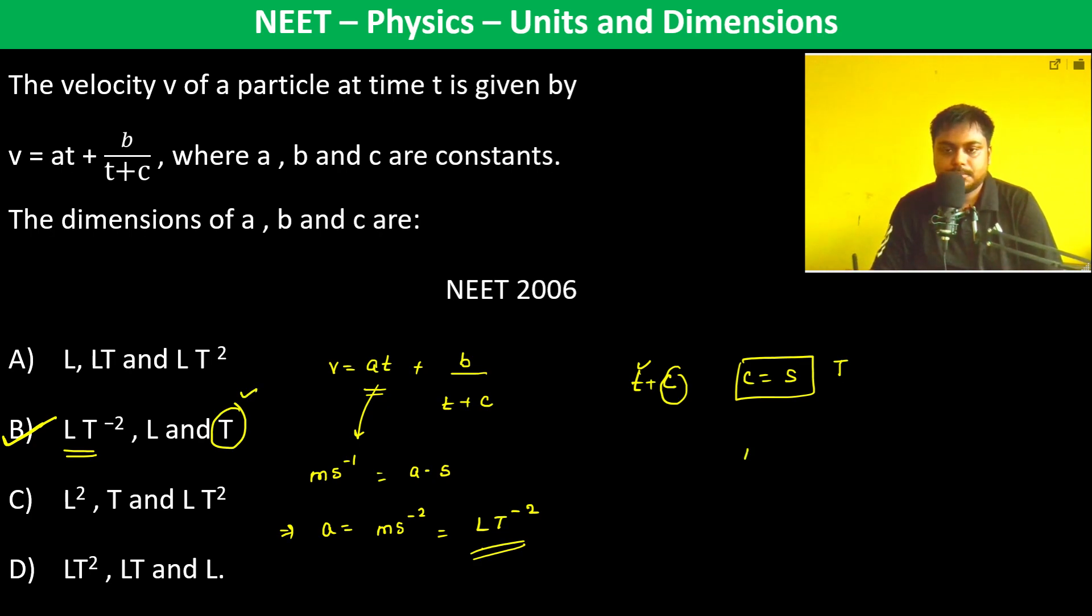And b by t should be equal to meter per second. That means b should be equal to meter per second into second gone, which is meter, which is L. So therefore, b option is going to be the correct.